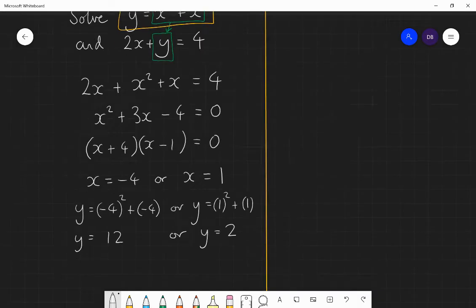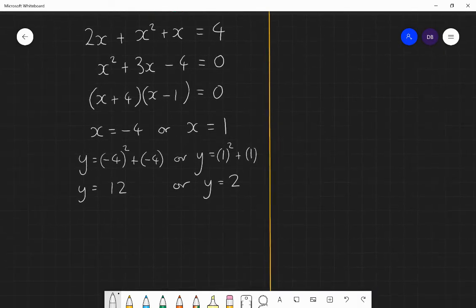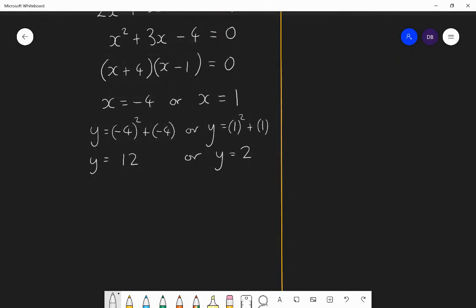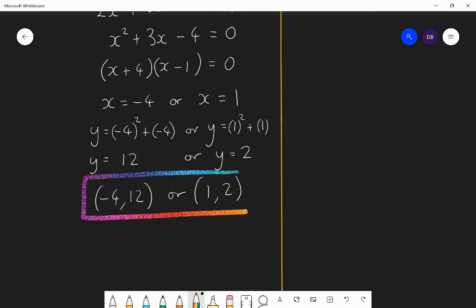Now I've solved simultaneous equations. However, I like writing my solution as coordinates, stating what are the coordinates. If I drew both graphs, what are the coordinates of the points where the graphs will cross? So the solutions are minus 4, 12 or 1, 2. So those are the two coordinates for which both equations will be true, the two coordinates where the two equations will cross.